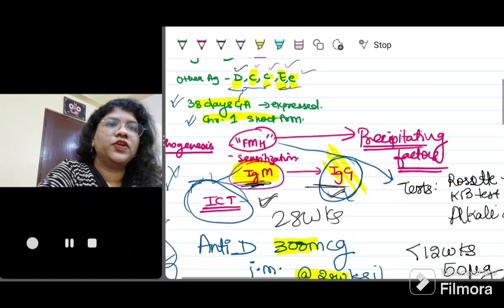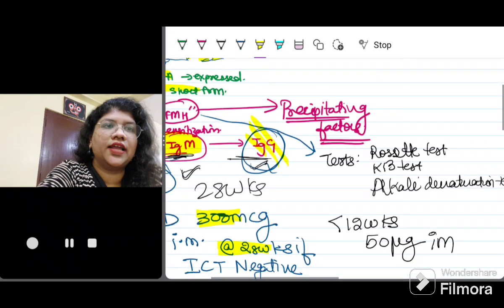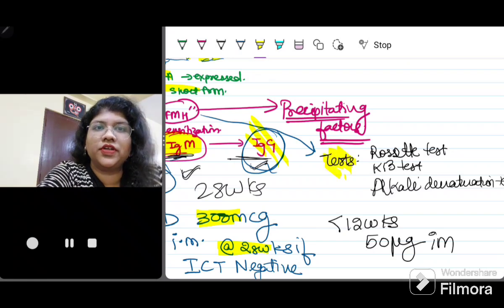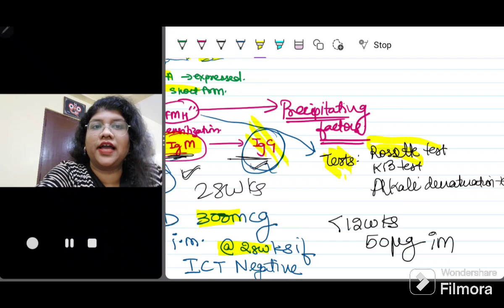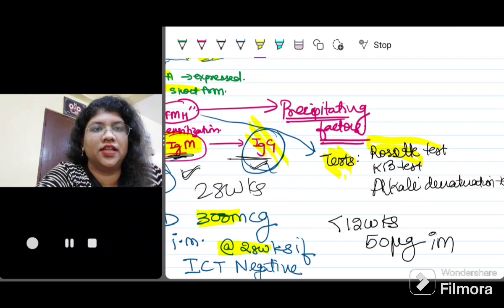When we are talking about fetomaternal hemorrhage, I just wish to highlight some tests that we can do. There are qualitative tests and quantitative tests. Rosette test is a qualitative test. When it is positive, it is high fetomaternal hemorrhage. If it is negative, there is low fetomaternal hemorrhage.